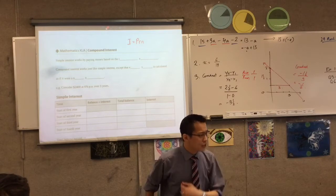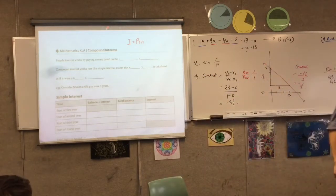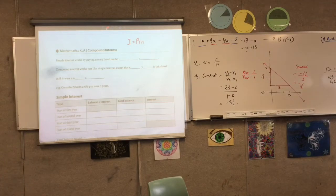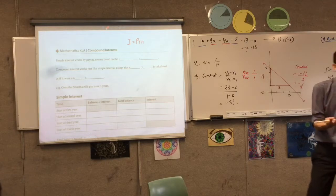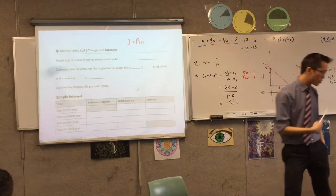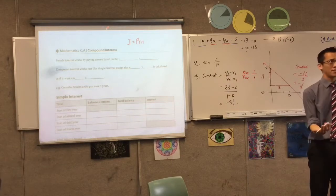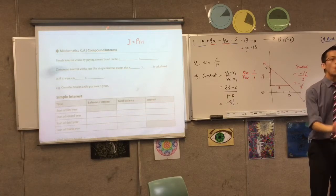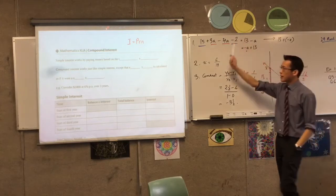Now, what do P, R, and N stand for? Principle, rate, and number of time periods — that's the best way to say it. Usually it's years but it's not always years; could be months, could be weeks. I equals PRN.